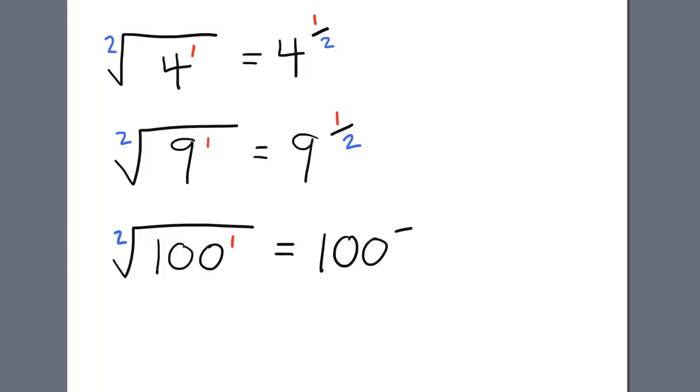The numerator will be the 1 because it's 100 to the first power, and the denominator will be the 2, which is the index of the radicand. So the square root of 100 can be rewritten as 100 to the 1/2 power.